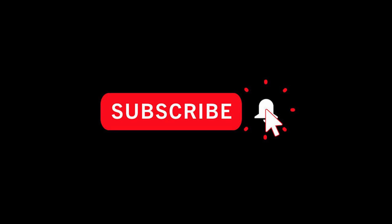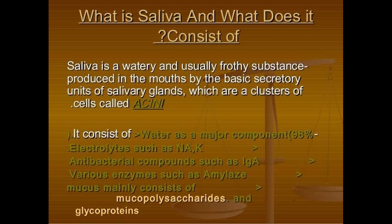First, we talk about what is saliva and what does it consist of. Saliva is a watery and usually frothy substance produced in the mouth by the basic secretory unit of the salivary gland. The saliva is secreted by the salivary gland, which is a cluster of cells called the acini. Saliva consists of water as a major component.